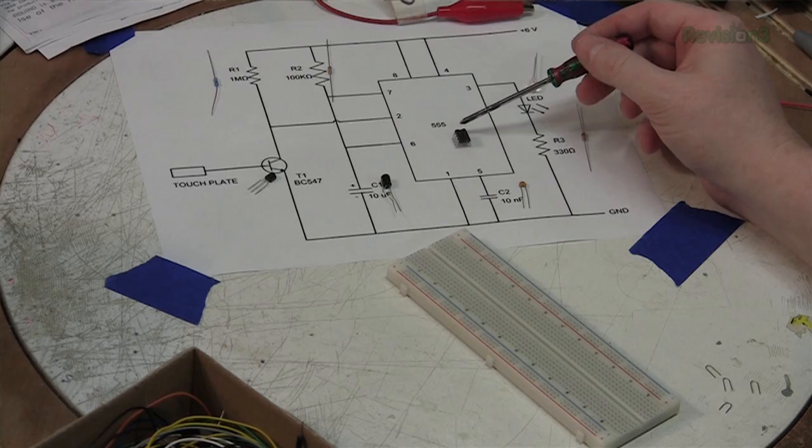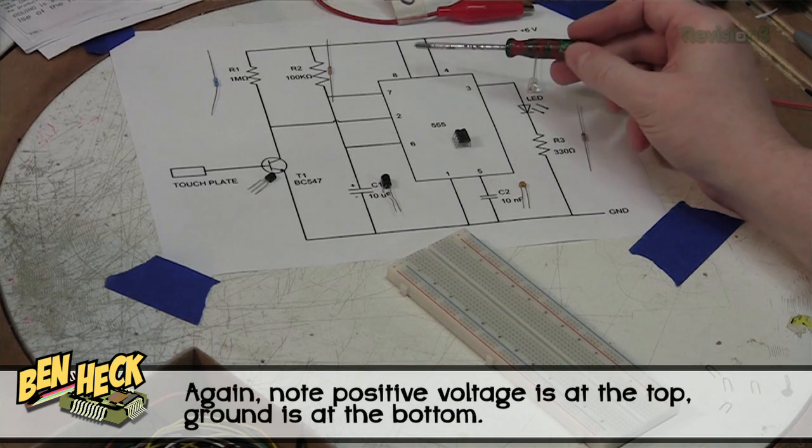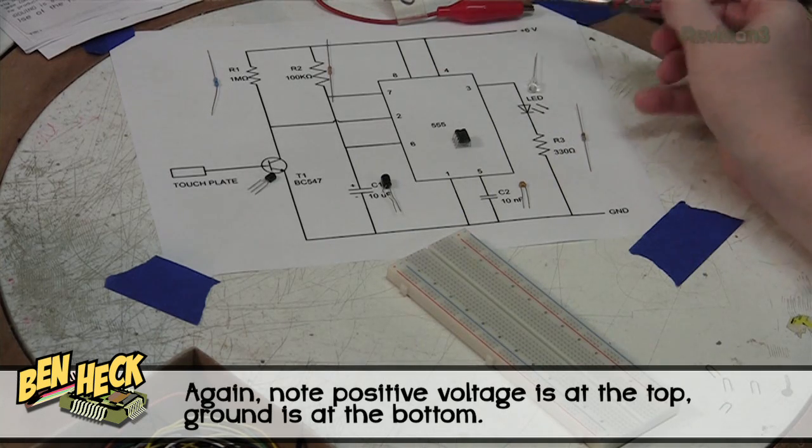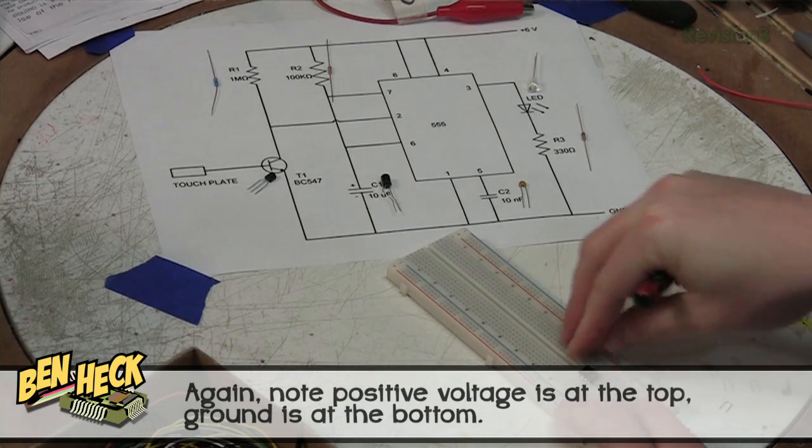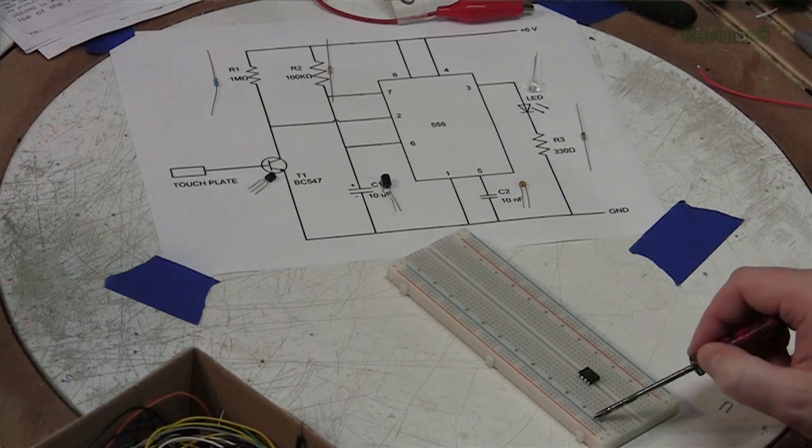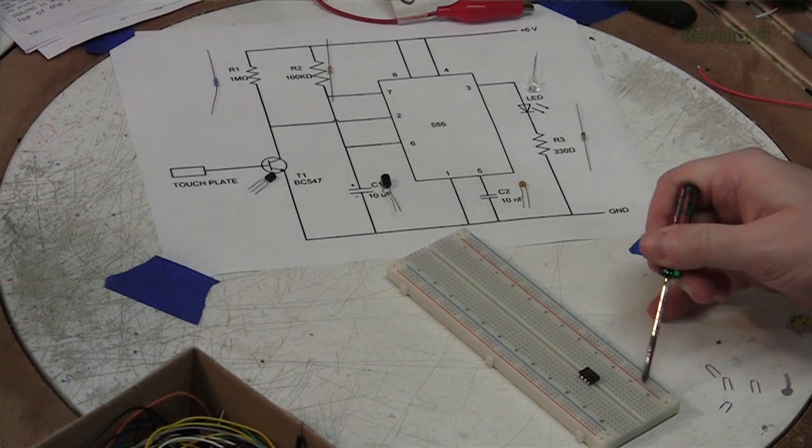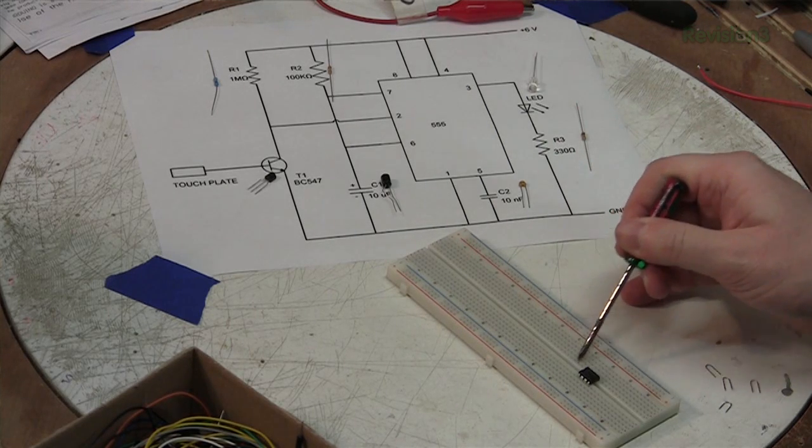On this type of integrated circuit, the pins go 1, 2, 3, 4, 5, 6, 7, 8. So on our diagram here, we see pins 8 and 4 are connected to positive 6 volts. So I'm going to take our 555 and put it on this breadboard here. Alright. Pins 8 and 4 go to positive voltage. So on this breadboard, you'll see there's two lines. There's a positive line and a negative line on each side, and those are connected all the way down separately.